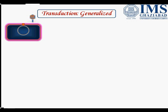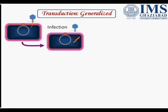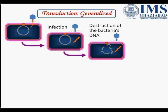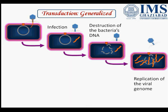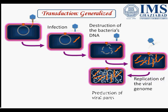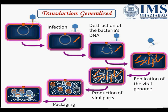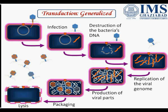In generalized transduction, the bacteriophage first attaches to the bacterial cell, then starts penetration, and the viral chromosome enters the bacterial cell. In the third step, destruction of the bacterial DNA occurs. In the fourth step, replication of the viral genome takes place, followed by production of viral proteins and viral parts. After that, packaging occurs, and the final step is lysis and release of the phage particles. This is the lytic cycle. In generalized transduction, any part of the chromosome can be transferred.